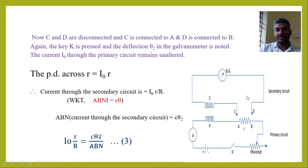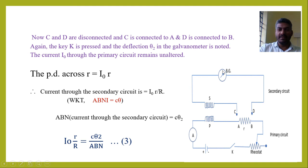Now let us move on to this circuit. Let us disconnect the connection C and D and instead connect terminal C to A and D to B. Now the secondary circuit is directly connected across the small resistor R. When C is connected to A and D to B, the ballistic galvanometer shows a deflection — let us call that deflection θ₂. This θ₂ is obtained by closing the key K.